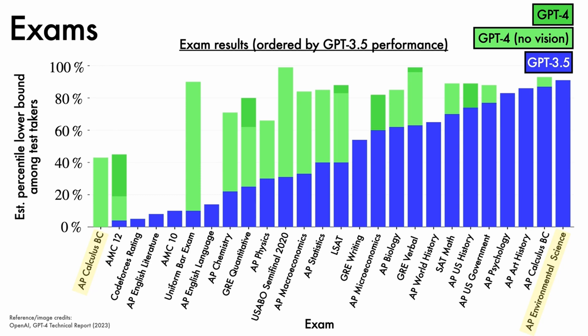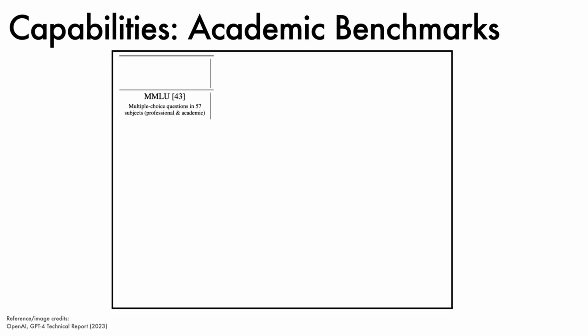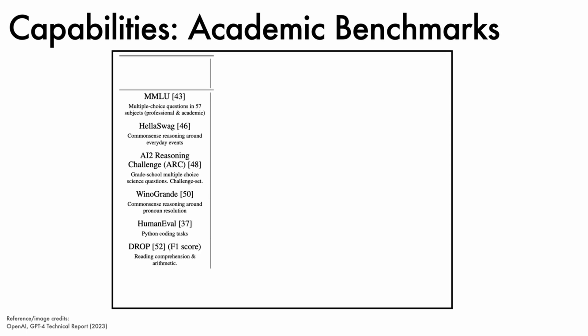For many topics, GPT 4 achieves major gains. The next experiments compare models on seven academic benchmarks: MMLU for multiple-choice questions spanning 57 subjects, HellaSwag for common-sense reasoning, AI2 Reasoning Challenge for grade school multiple-choice science questions, WinoGrande for common-sense reasoning, HumanEval for Python coding tasks, DROP for reading comprehension and arithmetic, and GSM 8K for grade school mathematics.